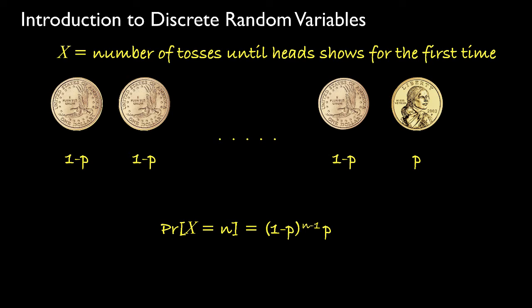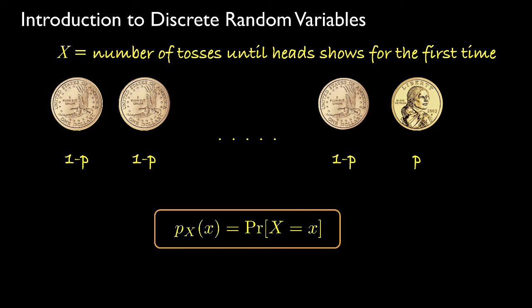The idea of a random variable is to assign a symbol like the capital letter X to the random event — in this case, the number of tosses until heads show for the first time. The collection of probabilities assigned for all the values this random variable can take is called the probability mass function. The notation uses a small p with a subscript identifying the random variable, and typically a lowercase variable like x, n, or k as an index to the values the random variable can take.